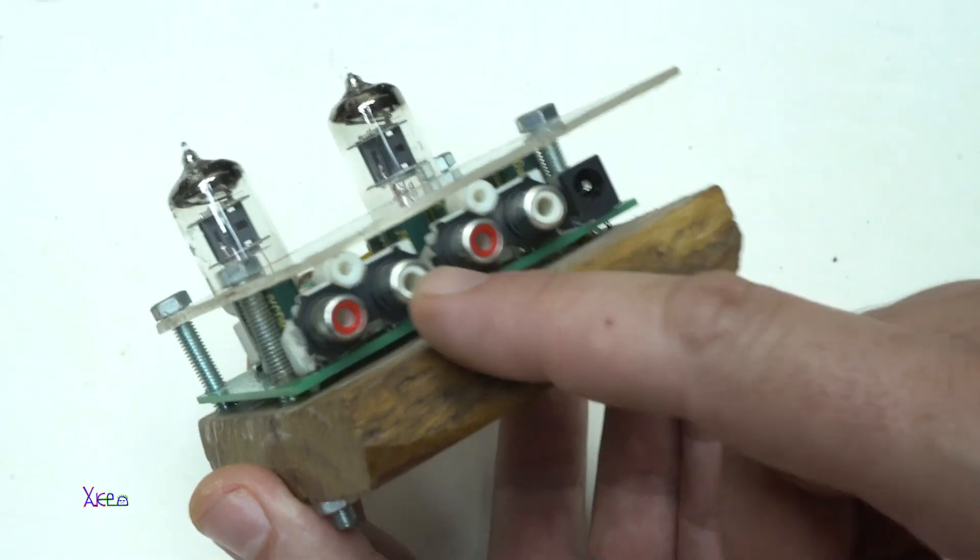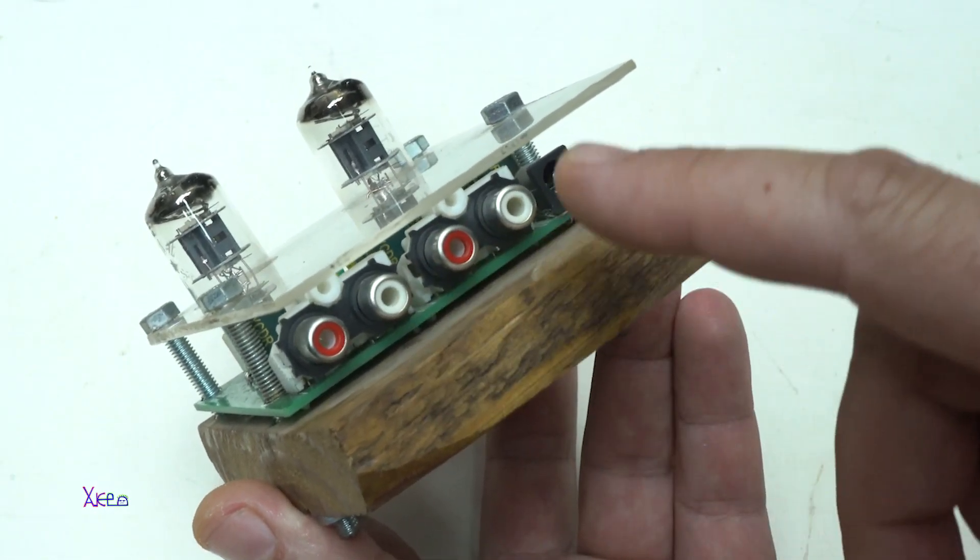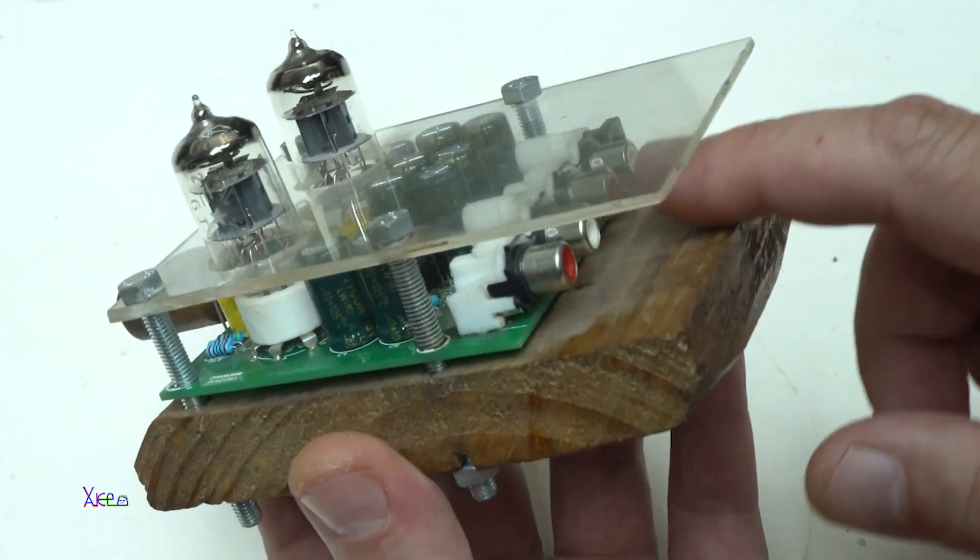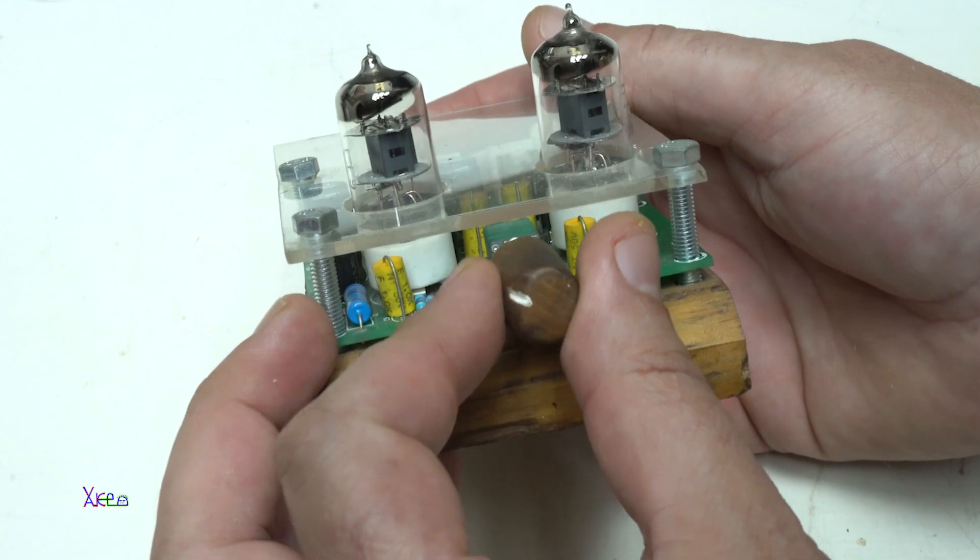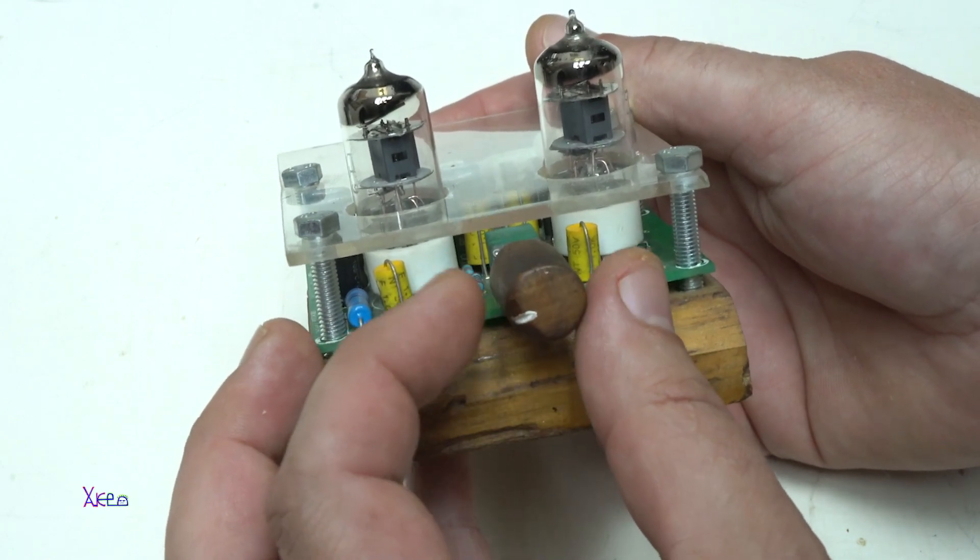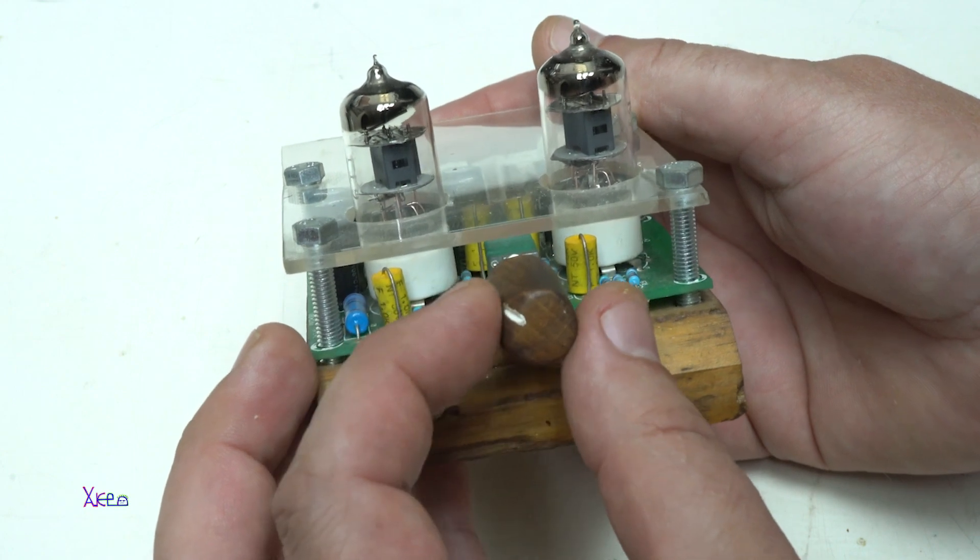Behind, we have input and output analog RCA jacks. On the front, we have a volume knob with power switch for turning on and off the whole device.